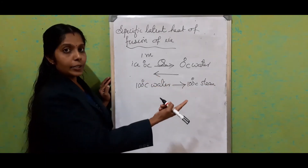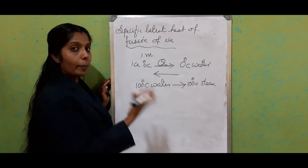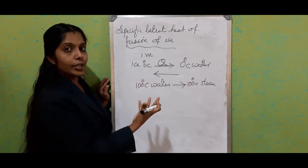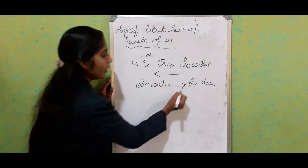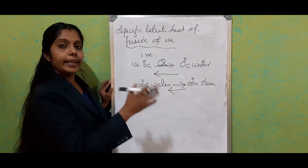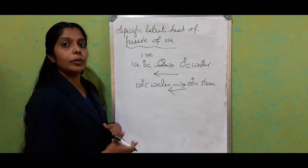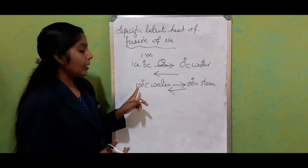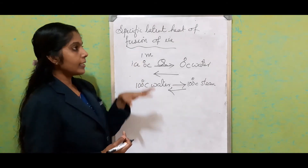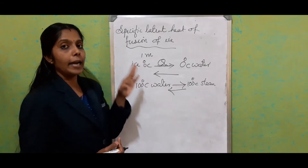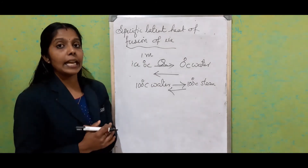Without any increase in temperature, the amount of heat energy absorbed by water at 100°C to change to 100°C steam is the specific latent heat of vaporization. For the reverse process, 100°C steam rejects a particular amount of energy to come back to 100°C water. This is the way we define specific latent heat for each phase transition.